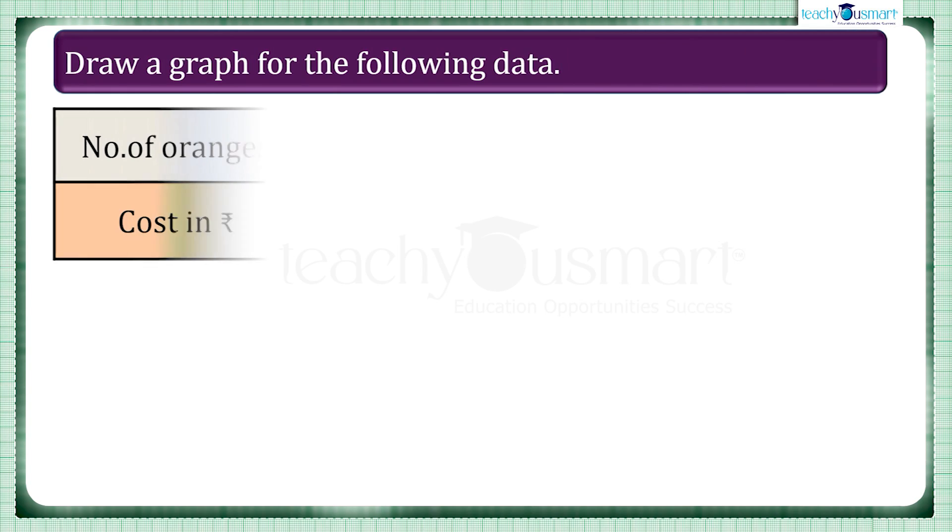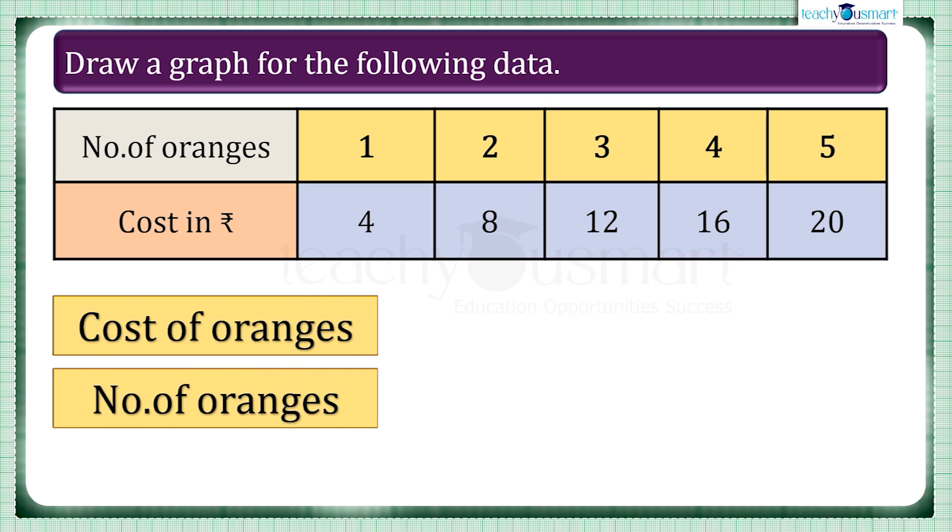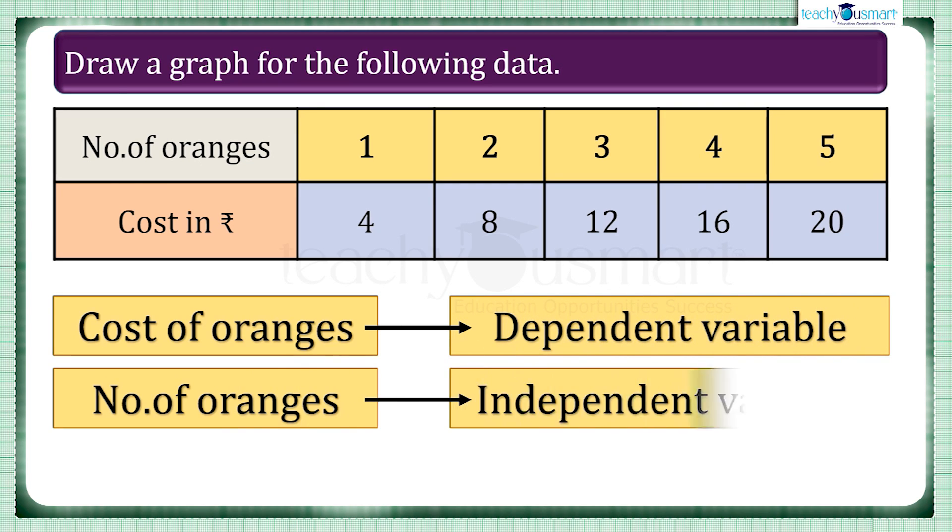Let's see another example. Draw a graph for the following data. Here we can see the cost of oranges depends on the number of oranges. So we can say the cost of oranges is a dependent variable and the number of oranges is an independent variable.